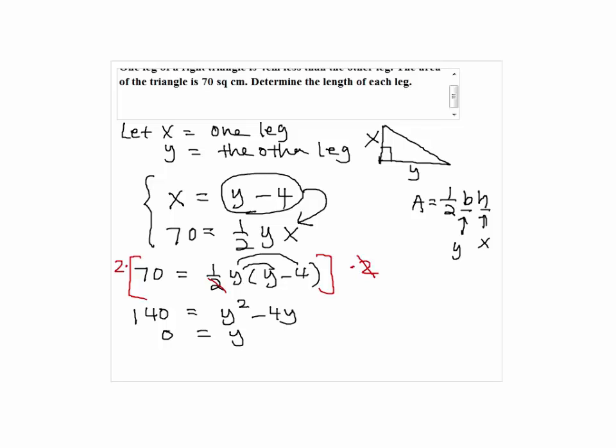By subtracting 140 on both sides, we have 0 equals y squared minus 4y minus 140.